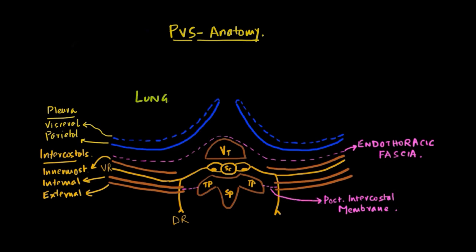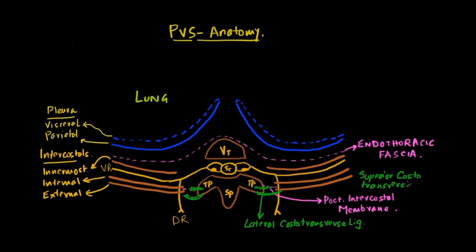Additionally, there are other ligaments connecting the transverse process and the rib at each level: the superior costal transverse ligament and the lateral costal transverse ligament a bit posteriorly. The lateral costal transverse ligament lies at the level of the transverse process, and therefore when you are trying to do a paravertebral block, you generally do not encounter it. On the other hand, the superior costal transverse ligament extends from the rib at each level to the transverse process above and forms the posterior boundary of the paravertebral space.